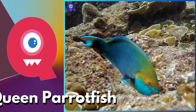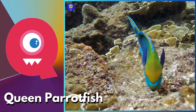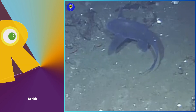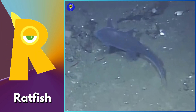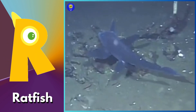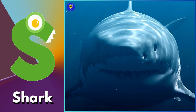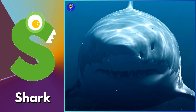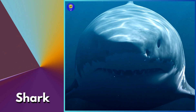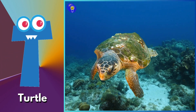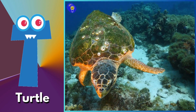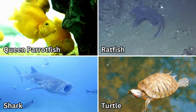Q is for queen parrotfish, kuh, quuh, queen parrotfish. R is for ratfish, pruh, pruh, ratfish. S is for shark, suh, suh, shark. T is for turtle, tuh, tuh, turtle.